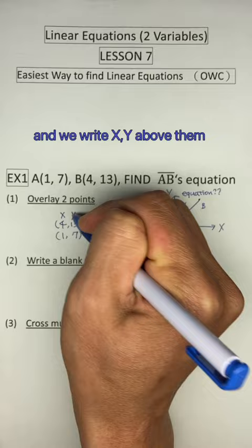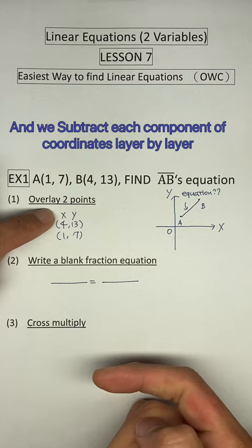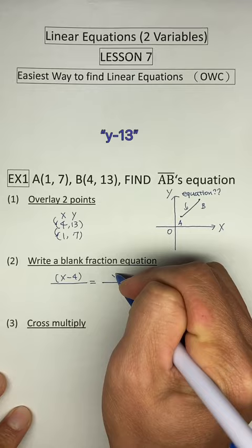Then we write a blank fraction equation like this, and we subtract each component of coordinates layer by layer. Like this, x minus 4, y minus 13, and then 4 minus 1, we get 3. 13 minus 7, we have 6.